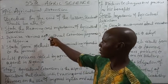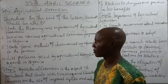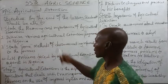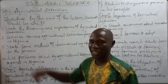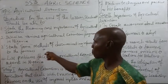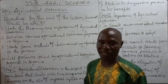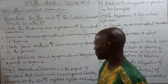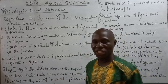Our objectives are: one, state the meaning and importance of agricultural extension; two, describe various agricultural extension programs in Nigeria; three, state some methods of disseminating information to farmers; and four, list problems faced by agricultural extension agents in Nigeria.